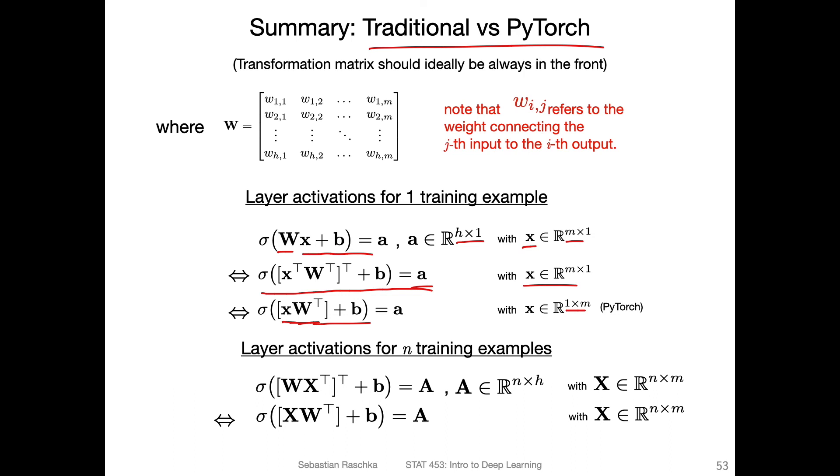This is actually my preferred representation, because this is kind of easy when we go back and forth between one or multiple training examples. At the bottom would be the cases where we have n training examples. If we want to use it the traditional way, we have to use two transposes, which is more work. This is the usual case in deep learning. We only have to use one transpose, it's shorter. This is also the way PyTorch implements it.